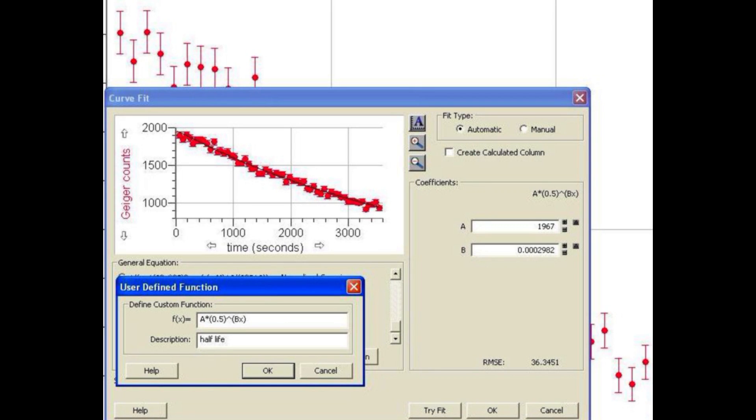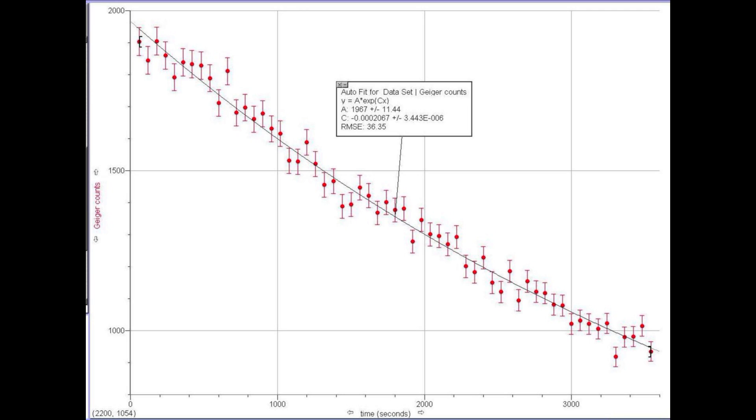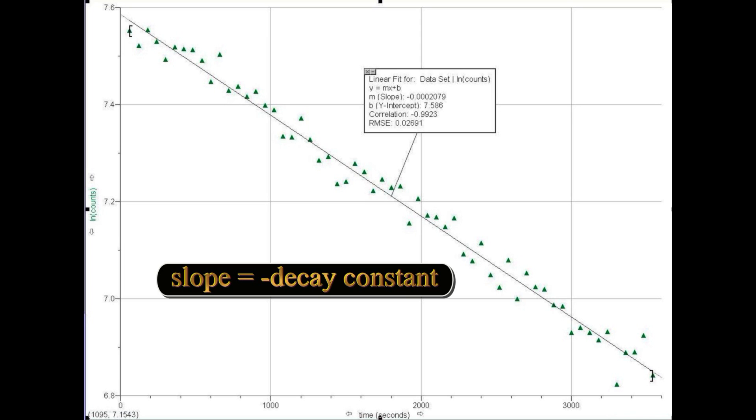We can also fit an exponential function to determine the decay constant. This time we fit the function a times e to the cx, where c is the negative of lambda. A plot of log n, or log count rate, versus time will yield a straight line with a slope of minus lambda.